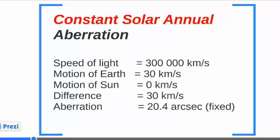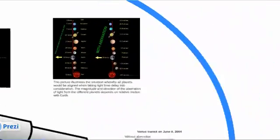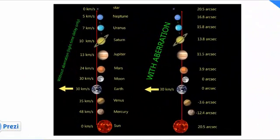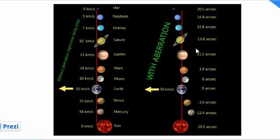We can visualize the difference in aberration as follows. From top to bottom we have the different planets of the solar system, and to the left we note the velocity. The higher the difference in velocity between the Earth and the observed planet, the higher the corresponding aberration term. For planets that go faster than the Earth, we see a negative aberration term, meaning the aberration is observed in the opposite direction.